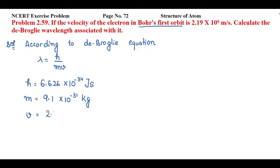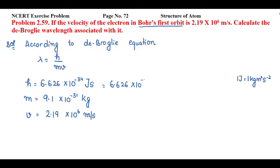Velocity is as mentioned in the question: 2.19 × 10⁶ meter per second. Since mass of electron is in kg and velocity is in meter per second, to cancel the units I will convert joule in terms of kg and meter per second. I know that 1 joule equals 1 kg·m²·s⁻², so Planck's constant becomes 6.626 × 10⁻³⁴ kg·m²·s⁻¹.